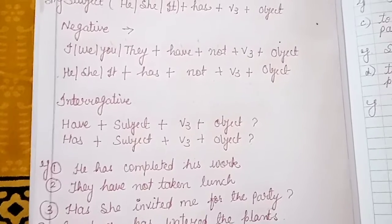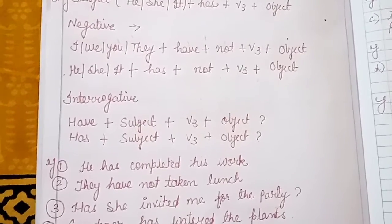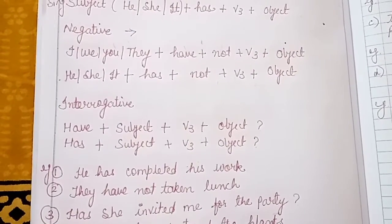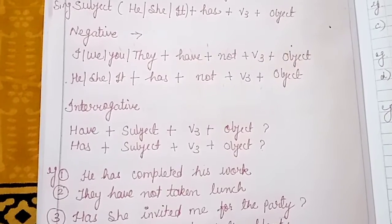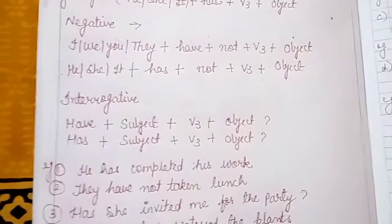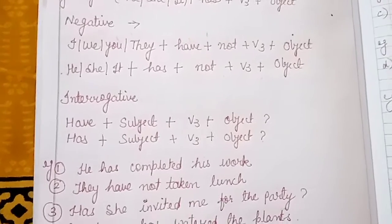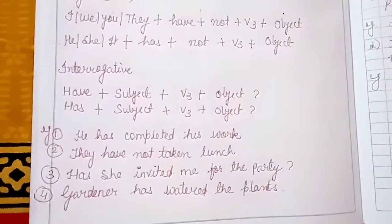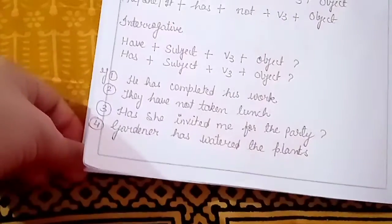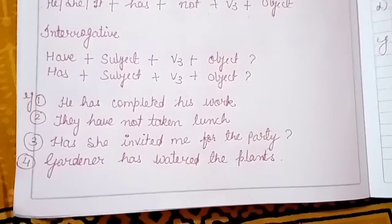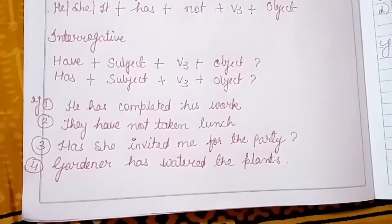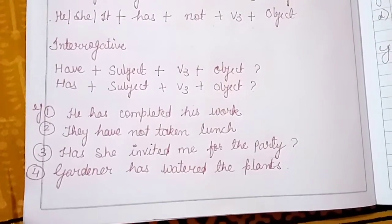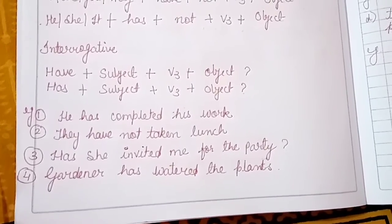For interrogative sentences, for a plural subject the structure is: 'have' plus subject plus verb third form plus object; and for a singular subject: 'has' plus subject plus verb third form plus object. For example: 'He has completed his work.' 'Completed' is the third form of the verb, and 'his work' is the object.